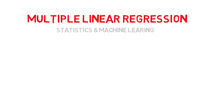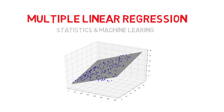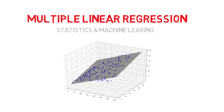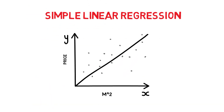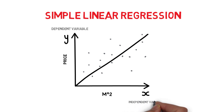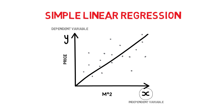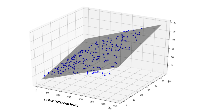In an earlier video we examined simple linear regression. This time we'll take an intuitive look at multiple linear regression, which is more commonly used as many problems in practice have multiple variables. While simple linear regression takes only one independent variable into account, multiple linear regression expands this concept to add more independent variables, such as the size of the garden space when predicting the price of a house.